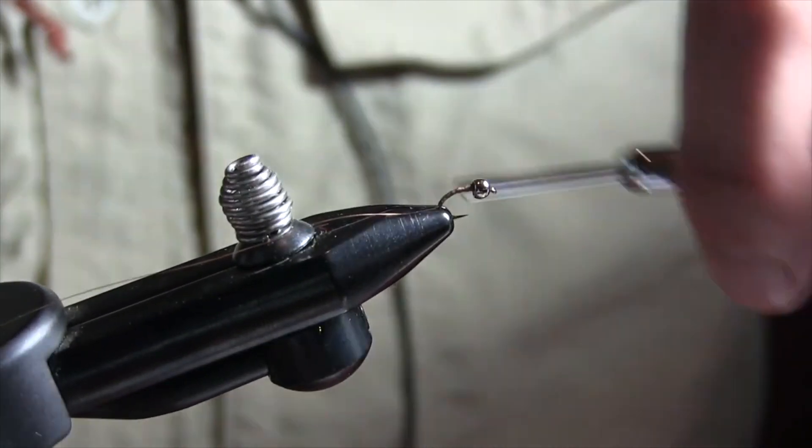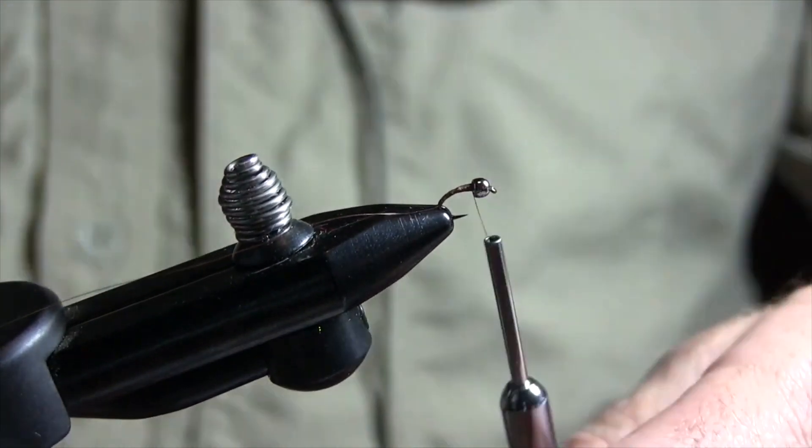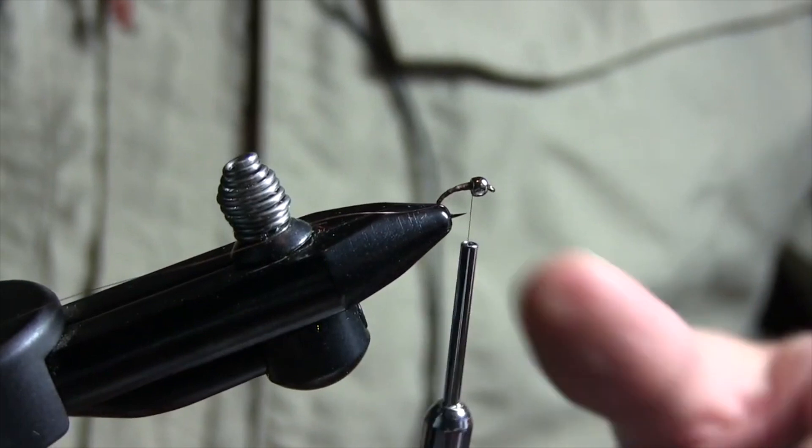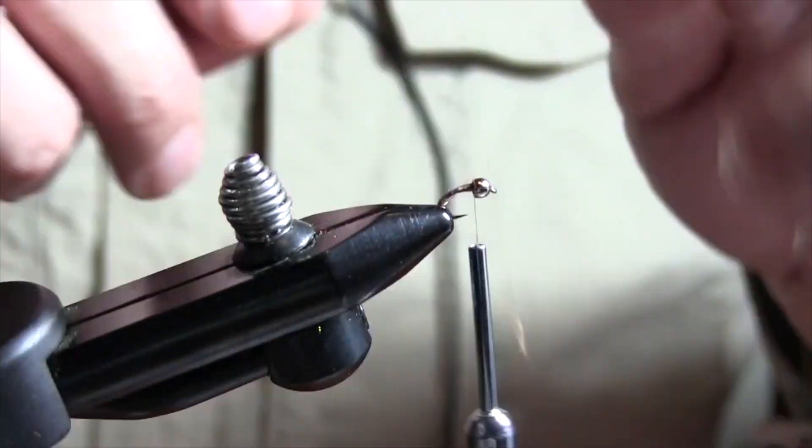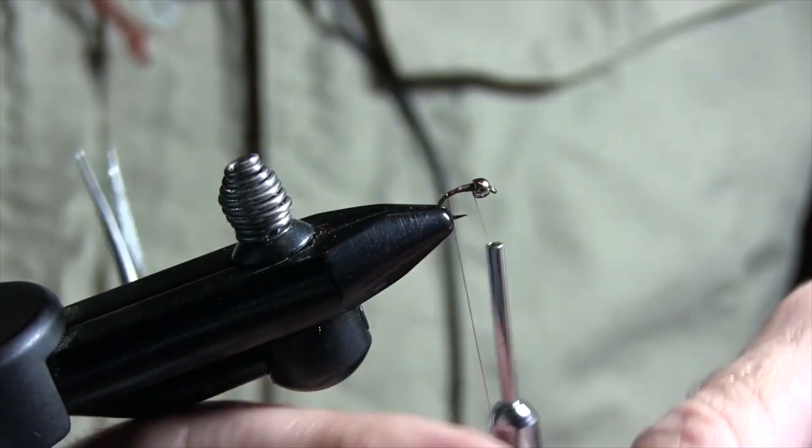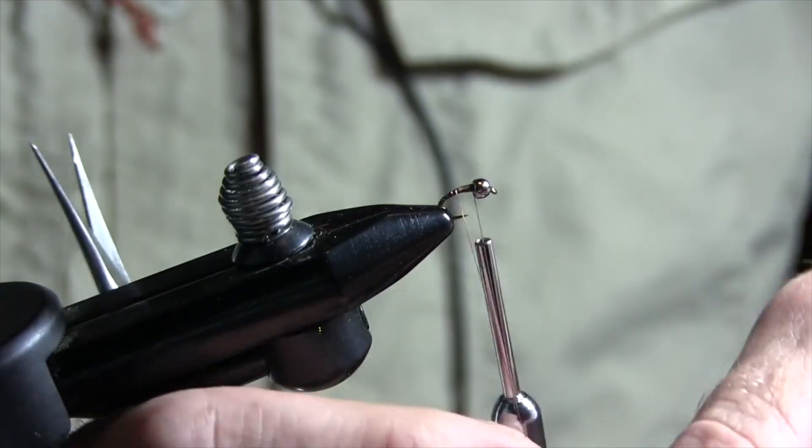You could probably get away with tying this in a 14 as well, but I think 16s and 18s for both midges - I think they take this for a midge as well as these caddis pupa. So pretty simple - you're just gonna rip your rib right back up.